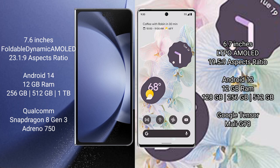The Samsung Galaxy Z Fold 6 comes with 12GB RAM and 256GB, 512GB, or 1TB internal storage options. It is powered by the Qualcomm Snapdragon 8 Gen 3 processor.